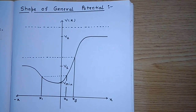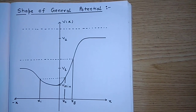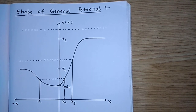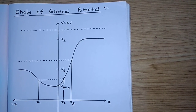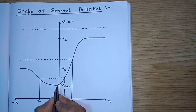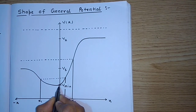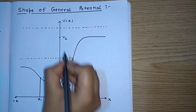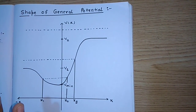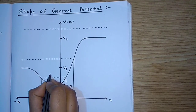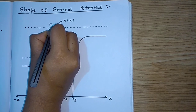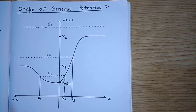Now I will discuss the general potential form. When is the particle in a bound state, when is it in an unbound or continuous state, and when is it in a mixed state? Here I have a general potential form, and I have marked three potential values: V minimum, V1, and V2. The character of the particle's state depends entirely on the size of the energy. I have considered three energies: E1, E2, and E3.